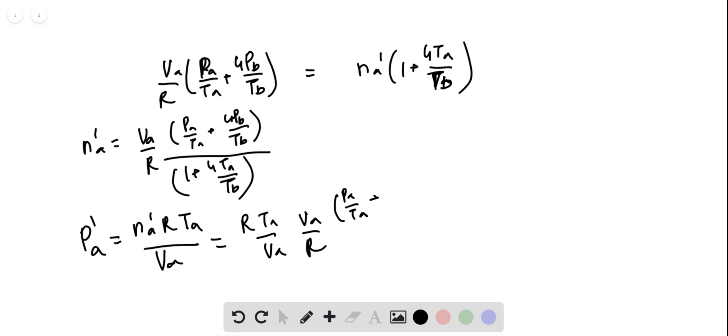We will substitute here, PA by TA plus 4 PB by TB divided by 1 plus 4 TA by TB. R cancels, VA cancels and this is your expression.